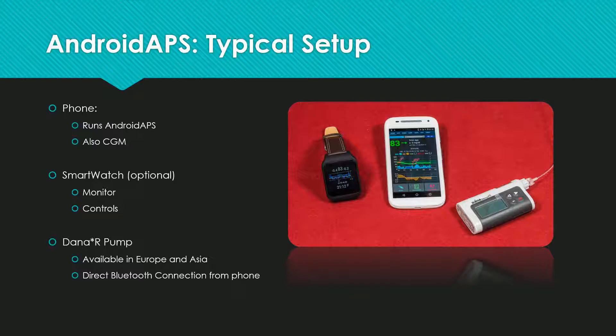Here you can see a common setup: a phone that runs Android APS and usually also acts as CGM receiver, a smartwatch as an optional tool to more comfortably monitor and control the system, and a DanaR pump. The pump at first looks a bit unimposing — at just 71 grams it is the smallest and most lightweight infusion set pump on the market, so easy to hide. Its strong suit is that it's fully Bluetooth controllable and you never really need to touch it during the day. I've heard there are plans to release an updated version to the US market next year.